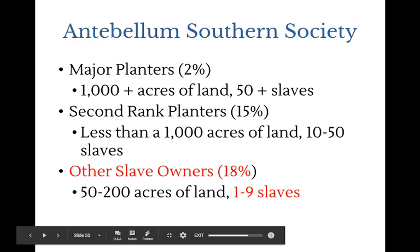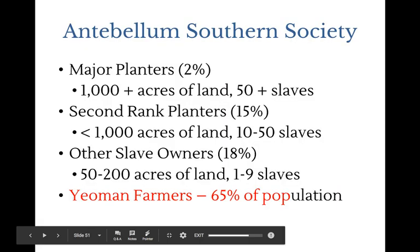So about 35 percent of the South owned slaves — you might think everyone in the South owned slaves, but that's not true. The majority of people in the South did not own slaves but had little economic or political power. There were about four million slaves by 1860 in the South. The majority of people in the South were yeoman farmers — they did their own farming, didn't own slaves, either hired others or did it themselves. That's 65 percent of the pre-Civil War southern population.